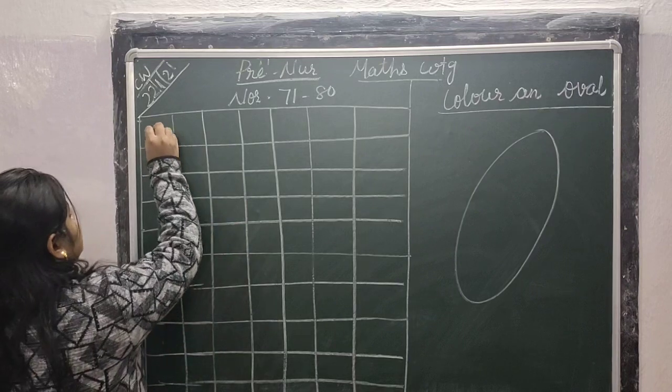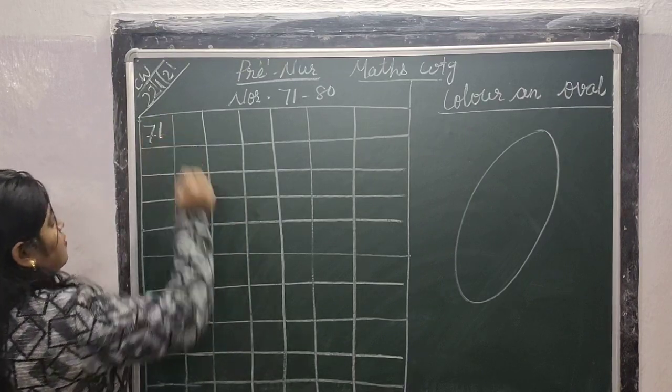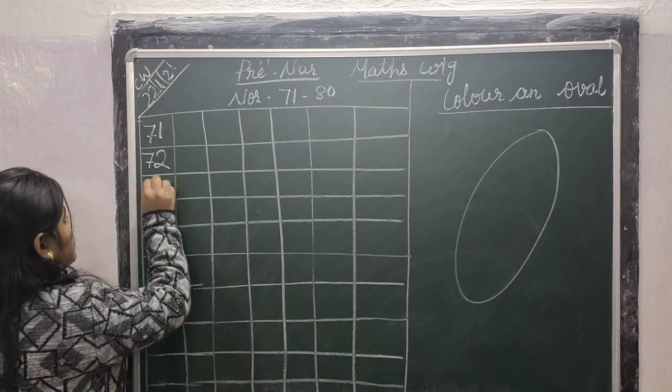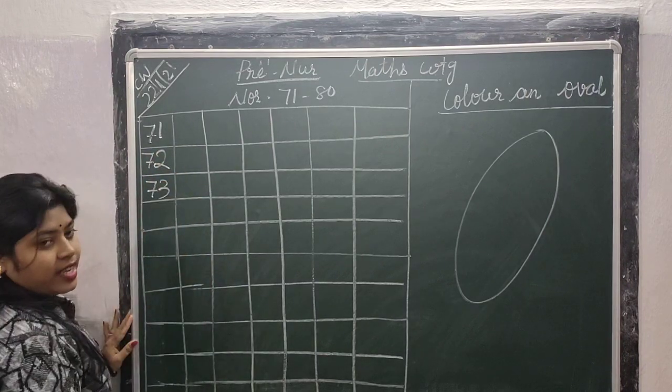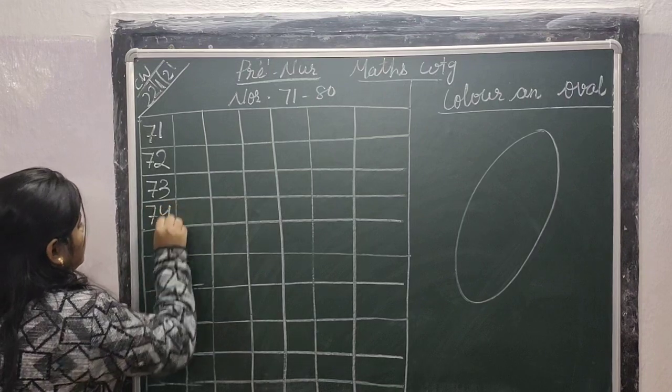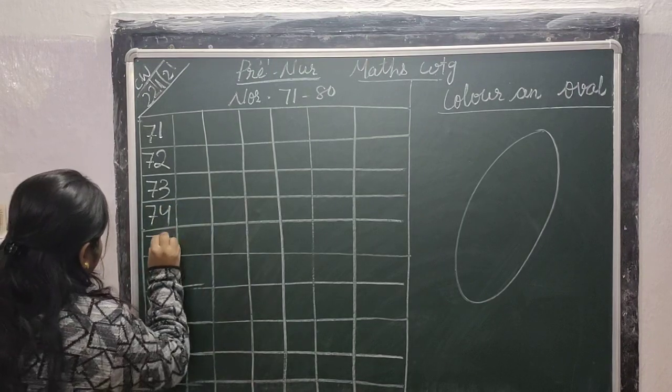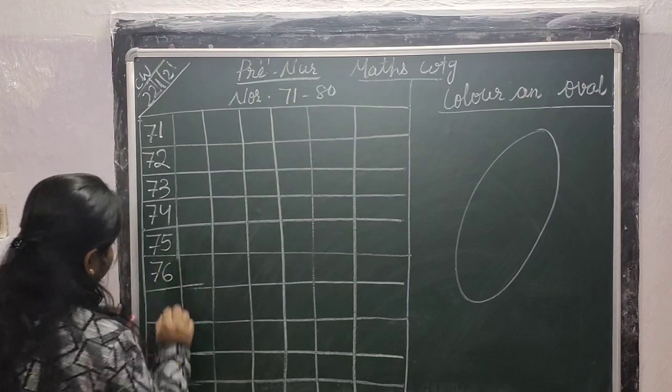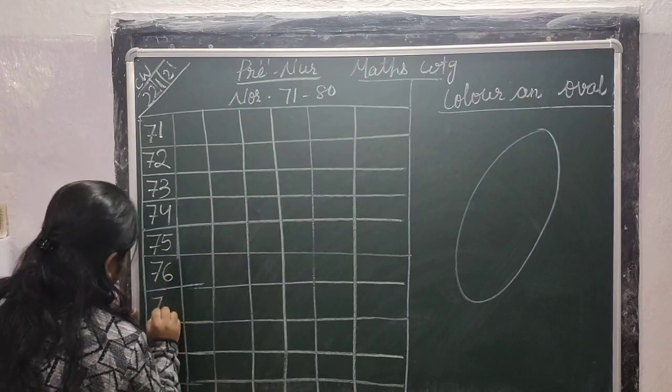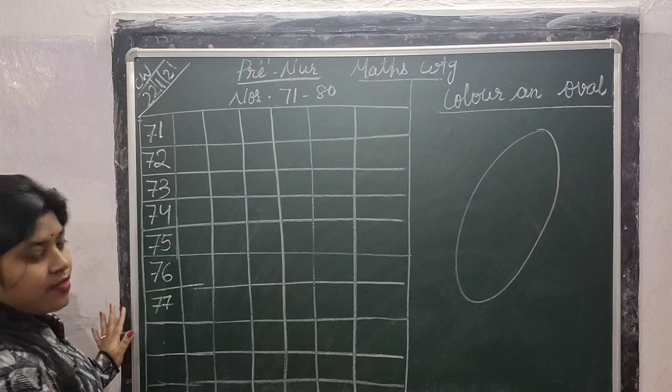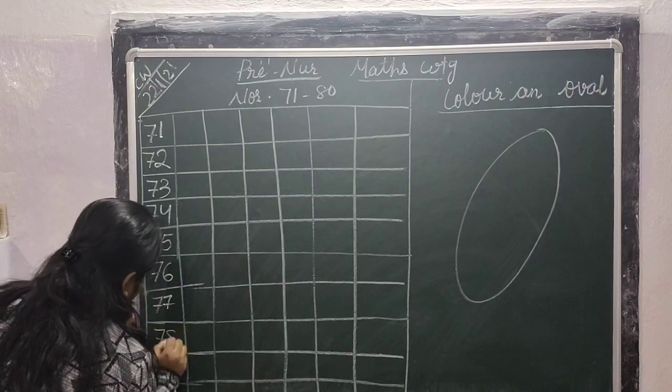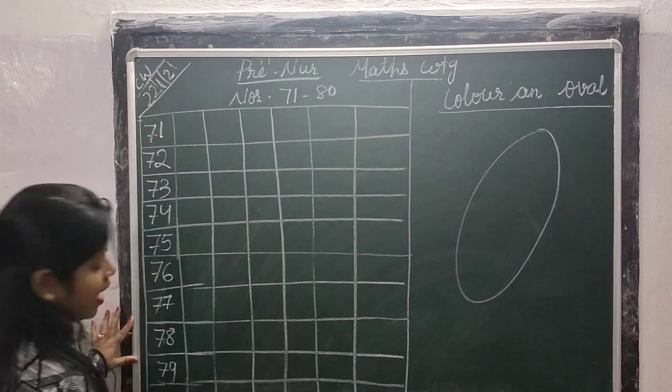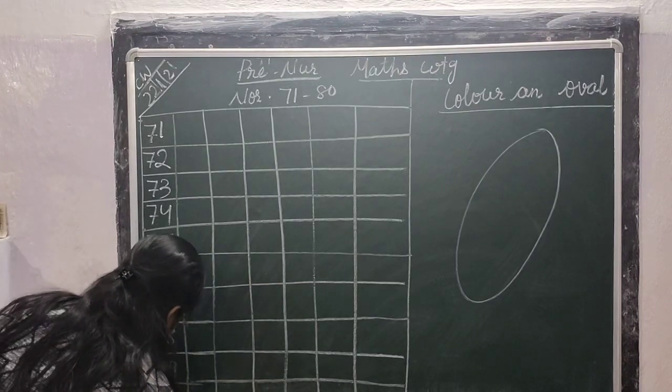Write here, 71 is 71, 72 is 72, 73 is 73, 74 is 74, 75 is 75, 76 is 76, 77 is 77, 78 is 78, 79 is 79, 80 is 80.